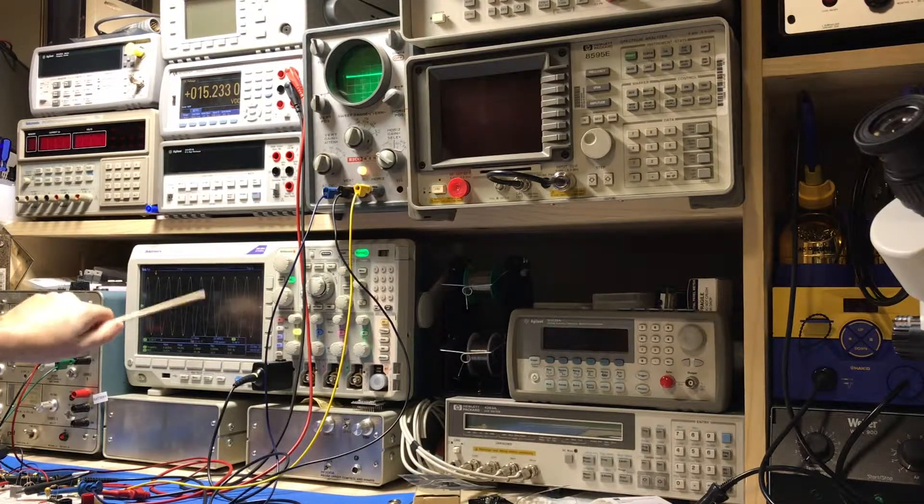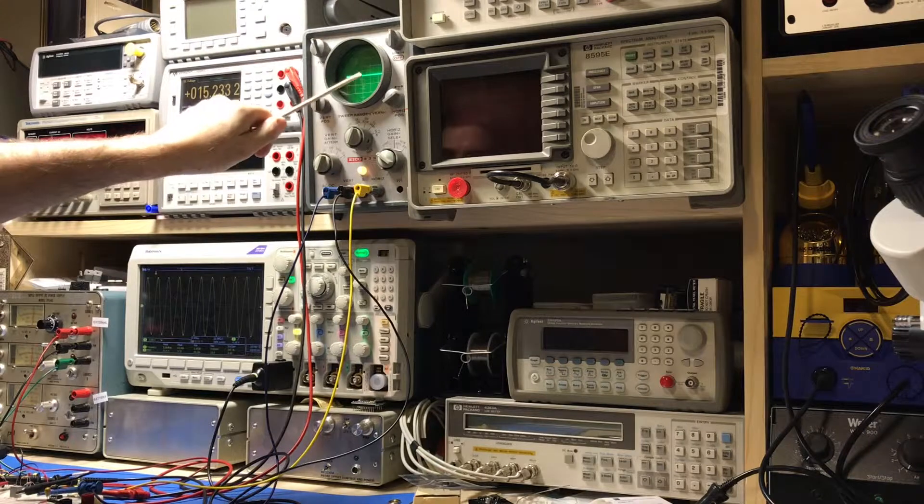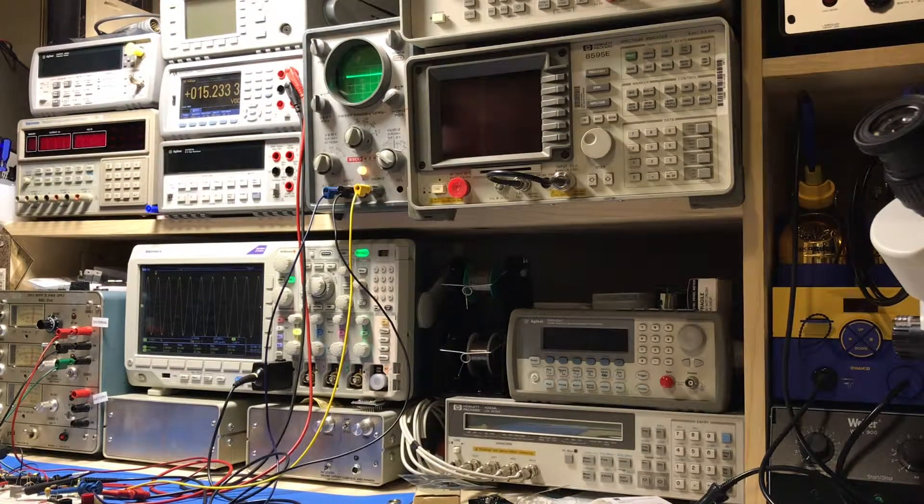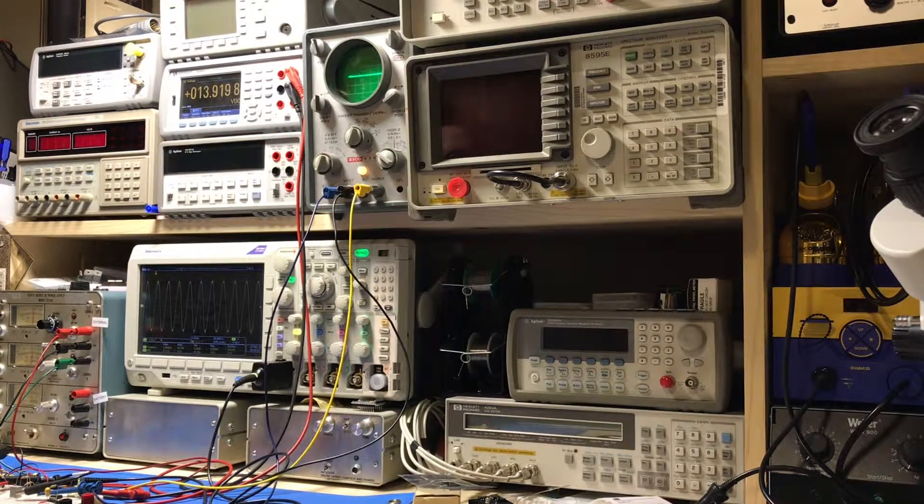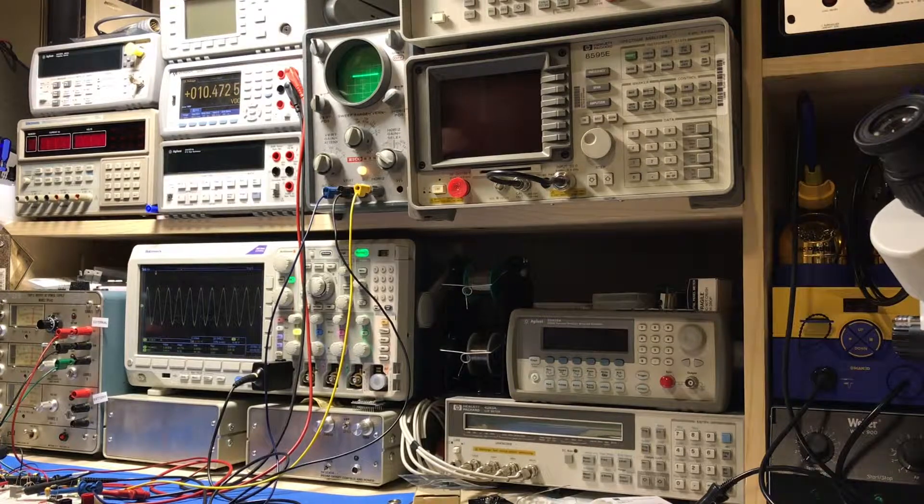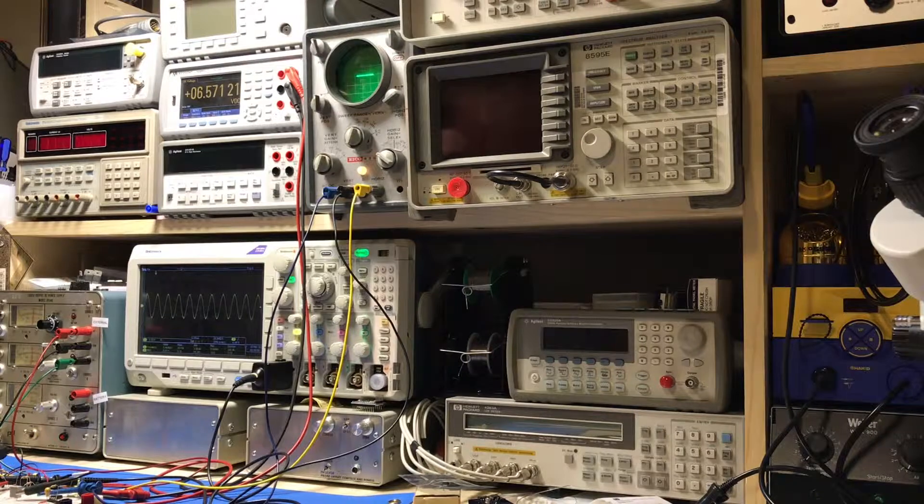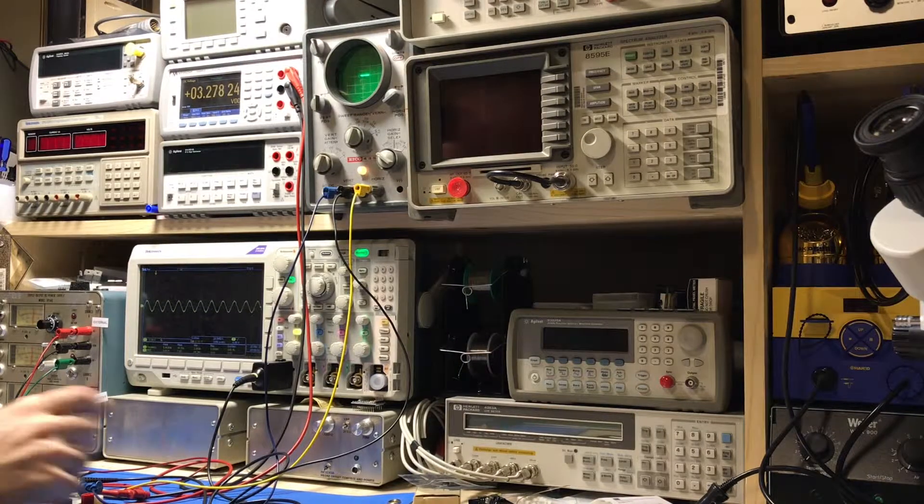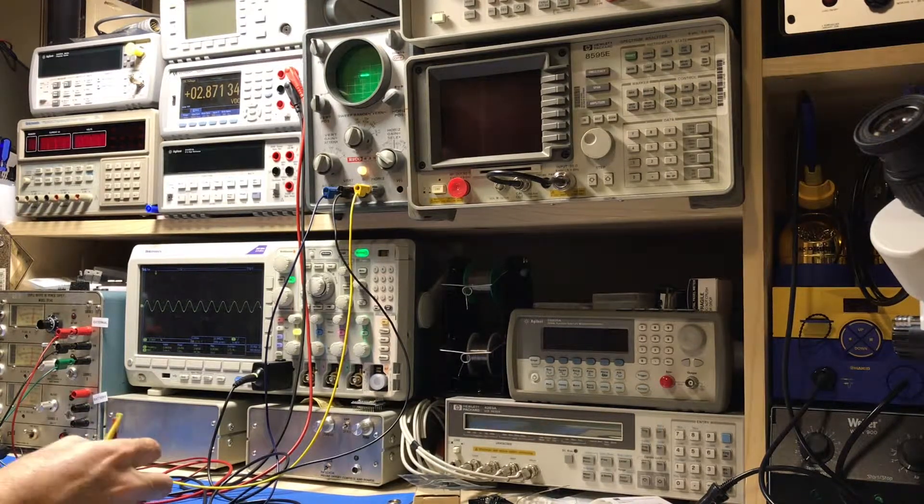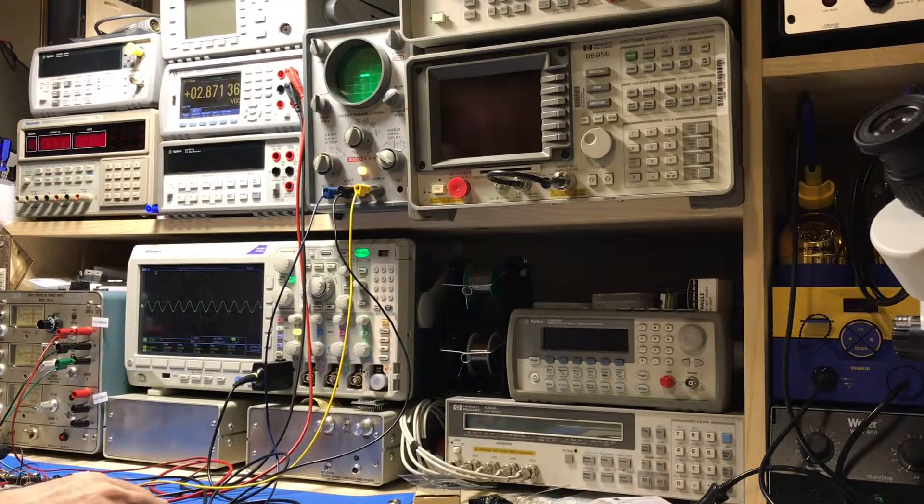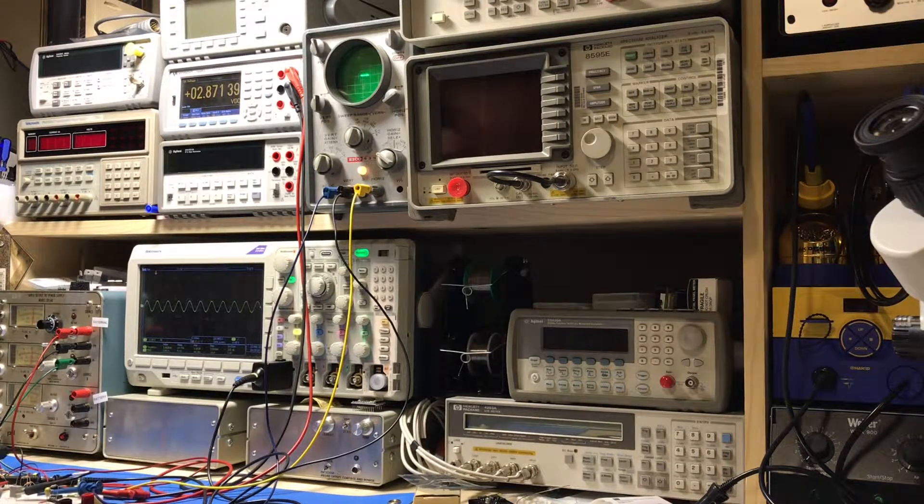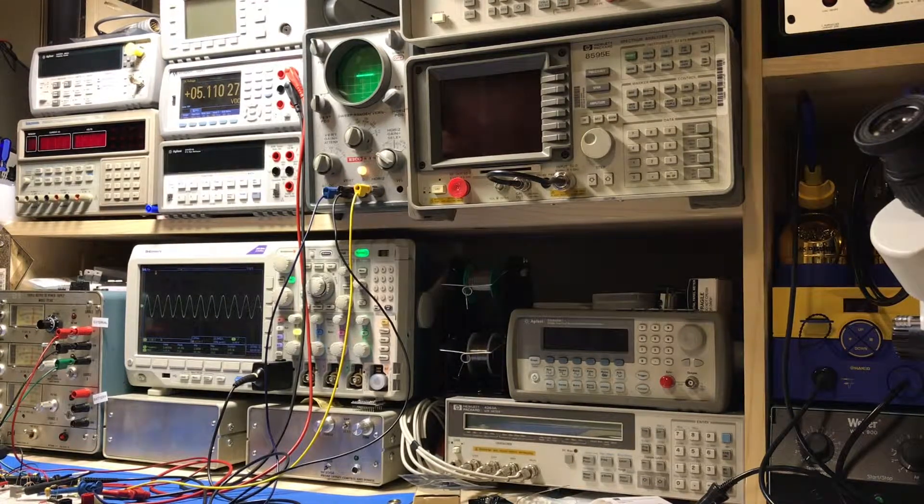If you watch on the curve tracer there, as we raise and lower the signal, we draw a horizontal line across the screen. Because right now the test probes for the curve tracer are open, and so in an open condition there's no vertical deflection.